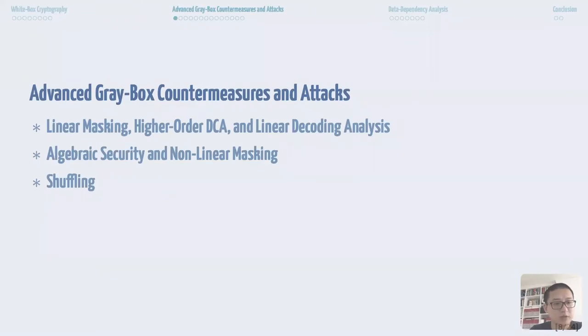So we start with the linear masking countermeasures and two attacks against it. Then we talk about algebraic security and nonlinear masking countermeasures. Finally, we talk about the role of shuffling countermeasures played in a white box implementation.